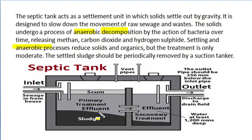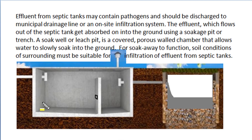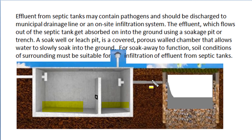Settling and anaerobic processes reduce solid sewage material and other organic compositions, but such treatment of sewage is only moderate, and the settled sludge should be periodically removed by a suction tanker when the septic tank gets filled by sludge formation. Solid sludge of sewage settles in the bottom section of the septic tank, and liquid effluents from the septic tank are allowed to pass into a nearby soak pit. If such liquid effluents from the septic tank are directly discharged in the near vicinity, they may contaminate the surrounding environment as the effluent contains pathogens. This effluent should be discharged to either the municipal drainage line or an on-site infiltration system.